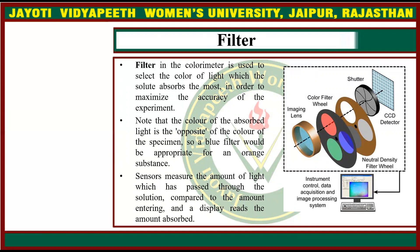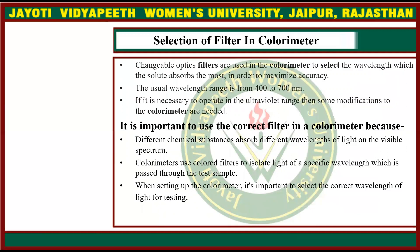The sensor measures the amount of light that has passed through the solution compared to the amount entering, and the display reads the amount absorbed. Changeable optic filters are used in the colorimeter to select the wavelength which the solute absorbs the most, in order to maximize accuracy.